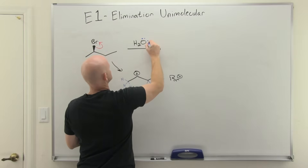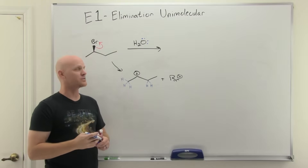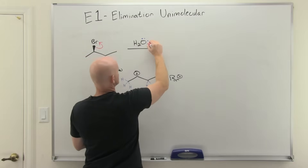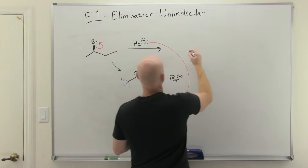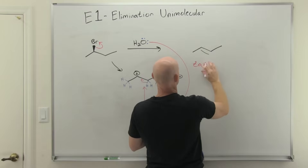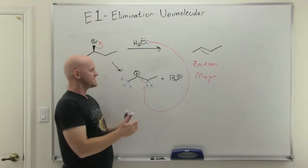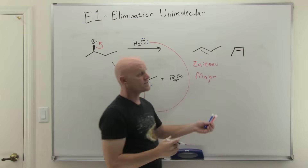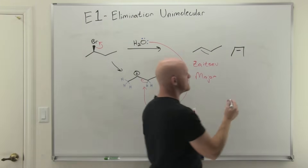Zaitsev is king when it comes to E1 reactions — we're always going to follow Zaitsev's rule. Water here is going to be our base, and just like SN1 reactions which typically involve weak nucleophiles, E1 reactions involve weak bases. It's typically going to be water or alcohols. We'll deprotonate the more substituted beta carbon so that frees up those electrons to form the pi bond and we get our more substituted alkene as our major Zaitsev product. We'll also form some cis as a minor product since this single bond can rotate.